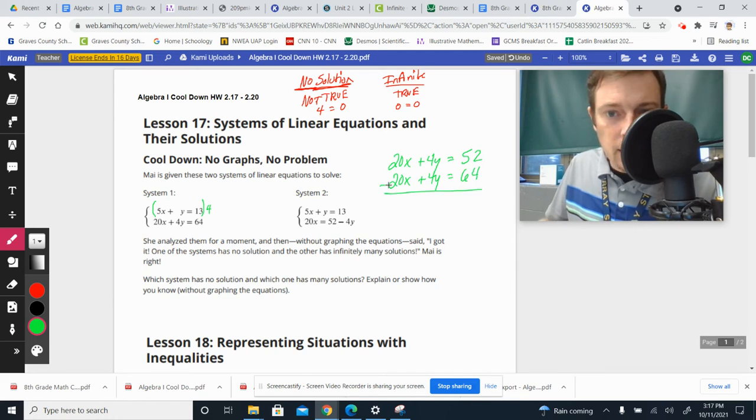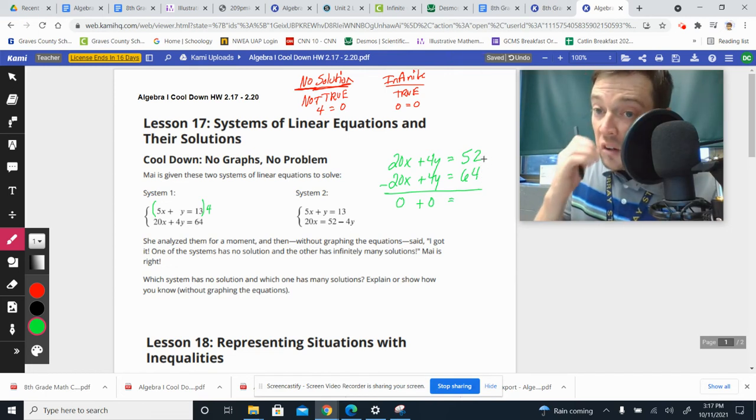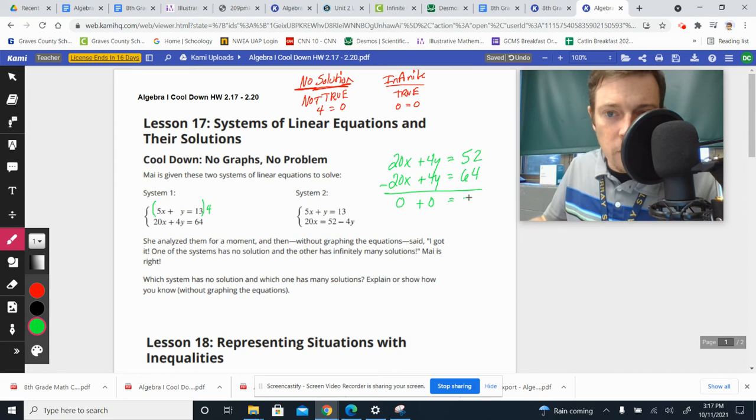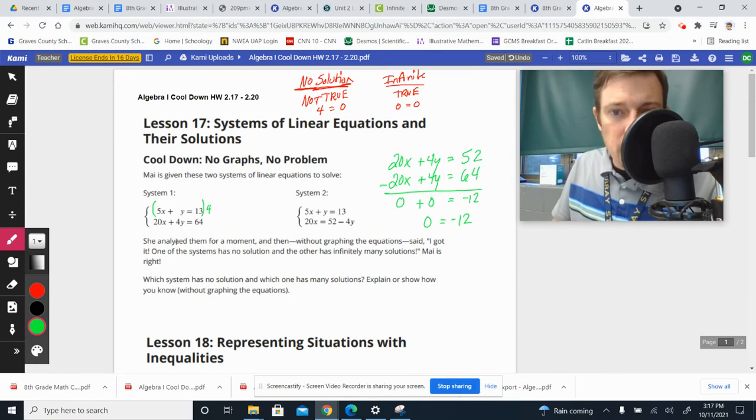And when we subtract and eliminate the x's and the y's, by subtraction here, 52 minus 64, 8 and 4 make 12, so that would be negative 12. We would get a statement that says 0 equals negative 12. By just working out that first system, I'm going to notice that this is not a true statement. So system 1 has no solution.